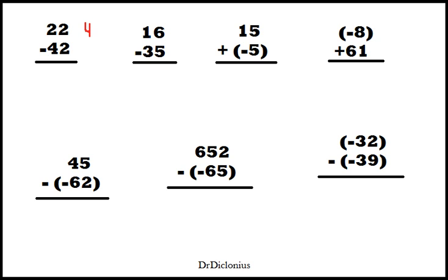So I like to put 42 on top and 22 on the bottom. And that way we can subtract 2 from 2, that'll be 0, and 4 from 2 will be 2. So the answer will be negative 20 because we flipped it.